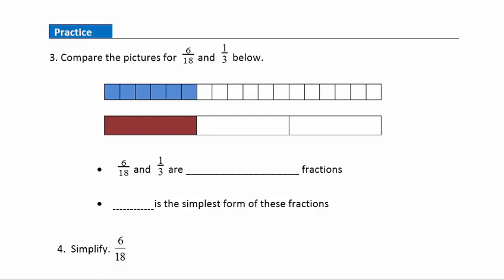Question 3: compare the pictures for 6/18ths and 1/3. Since 6/18ths and 1/3 are equal in value but written differently, those are equivalent fractions. Of those equivalent fractions, 1/3 is in its simplest form. Now let's take a look at how we simplify 6/18ths down to its simplest form of 1/3.